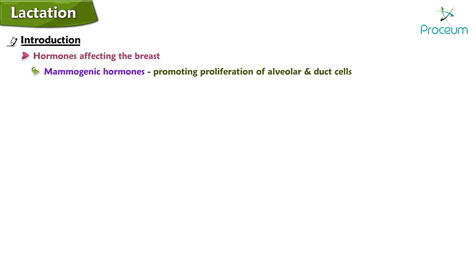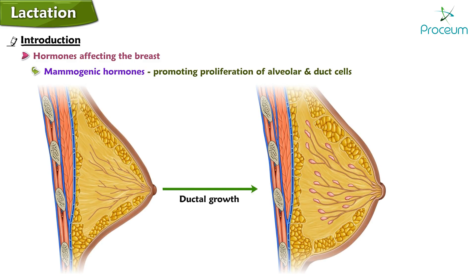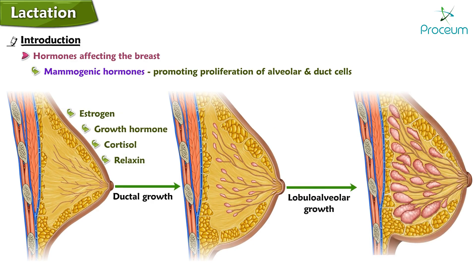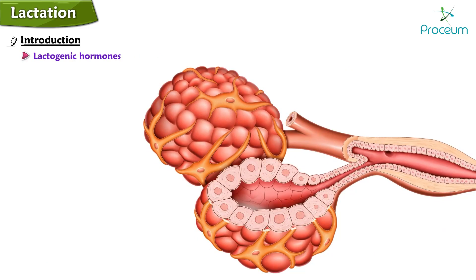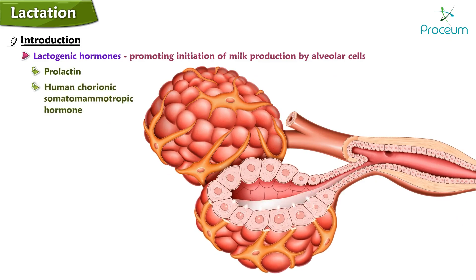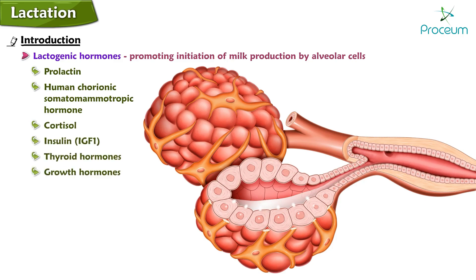Hormones affecting the breast are classified by function. Mammogenic hormones promote proliferation of alveolar and duct cells: ductal growth is carried out by estrogen, growth hormone, cortisol, and relaxin; lobular alveolar growth is carried out by estrogen, growth factor, cortisol, prolactin, and relaxin. Lactogenic hormones promote initiation of milk production by alveolar cells.